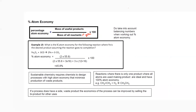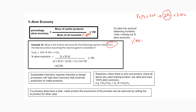For example: what is the percentage atom economy for the reaction where iron is the desired product? The equation is iron(III) oxide reacting with carbon monoxide to form two iron and three molecules of carbon dioxide. Iron is our desired product — we want to extract or produce iron in this redox reaction.